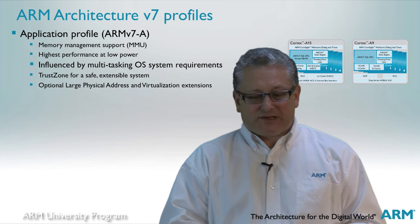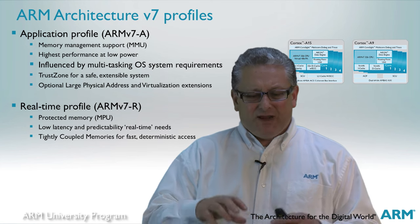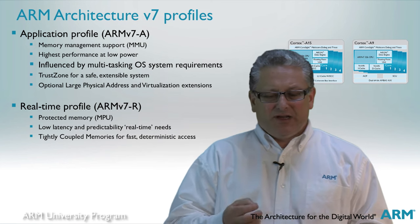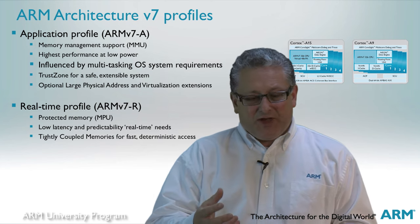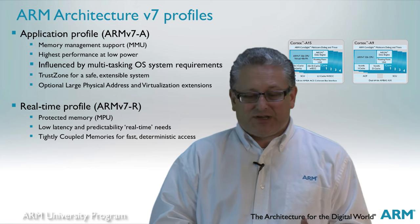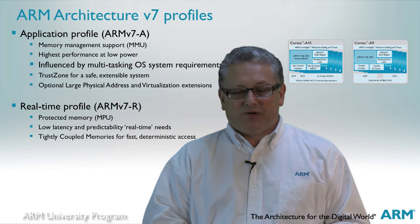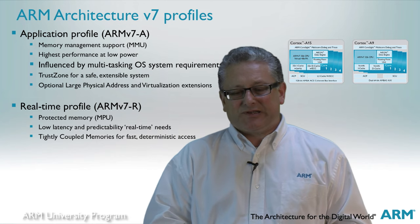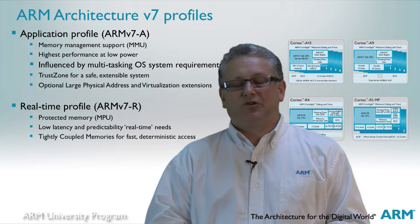Next we come to the ARMv7R profile, sometimes referred to as the hidden architecture because it's typically used in very deeply embedded applications. This profile incorporates extensions which make it particularly good at hard real-time, where very deterministic behavior is required. For that reason they don't support virtual memory. They typically support dedicated interfaces for high-speed on-chip memory, and extensions like low interrupt latency that make response to real-time events much more deterministic and predictable. Typical applications are engine management systems and hard disk drive controllers, currently supported by cores like the Cortex-R4 and Cortex-R5.